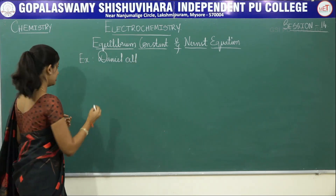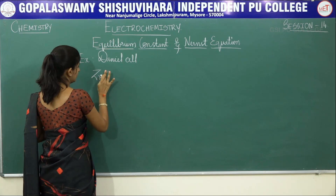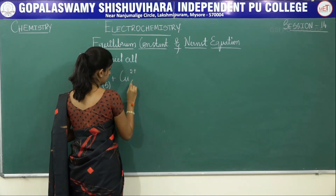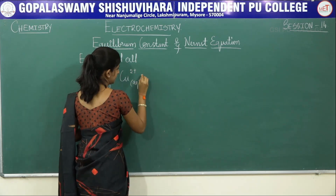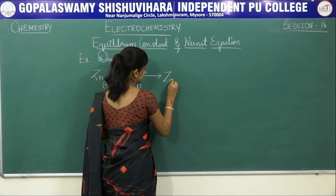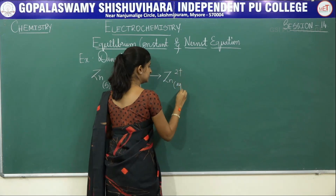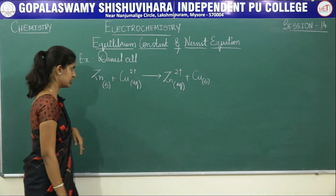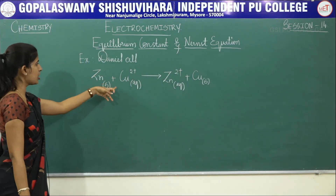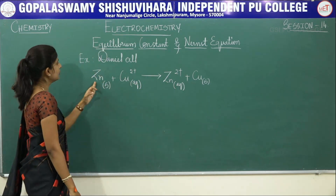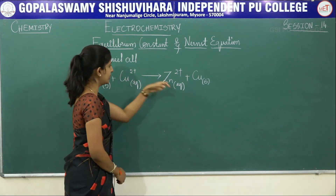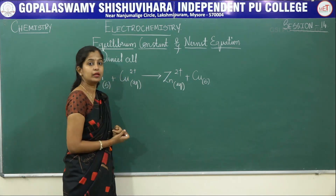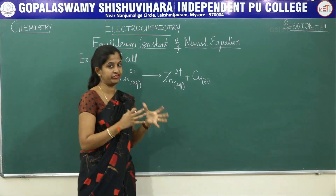What is the cell reaction? We know zinc undergoes oxidation while copper undergoes reduction. So this is your cell reaction — zinc undergoes oxidation, copper undergoes reduction. Zinc and copper are two different half cells: zinc is your oxidation half cell, and copper is your reduction half cell, present in two different containers.